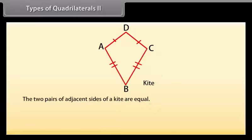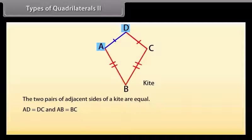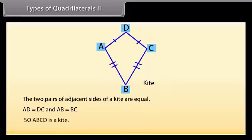The last type is kite: the two pairs of adjacent sides of a kite are equal. Here AD = DC and AB = BC, so ABCD is a kite.